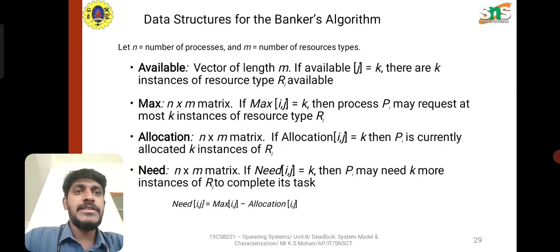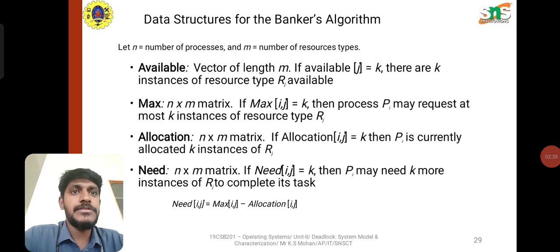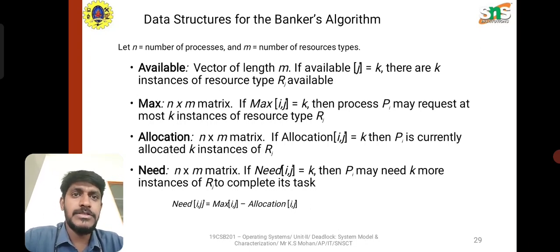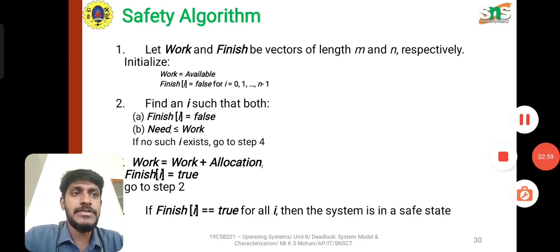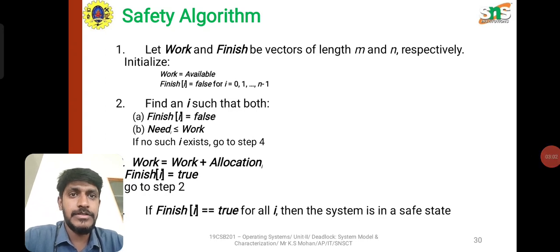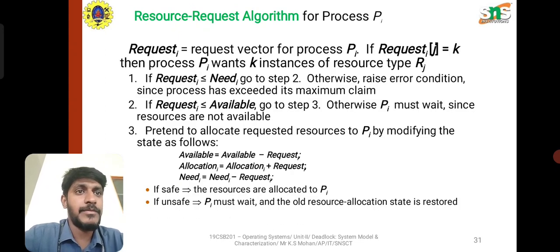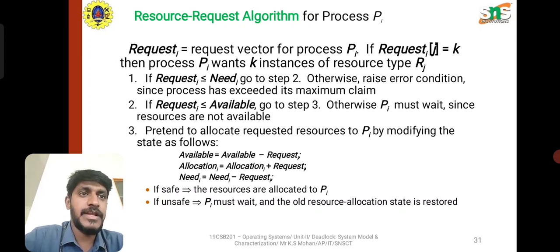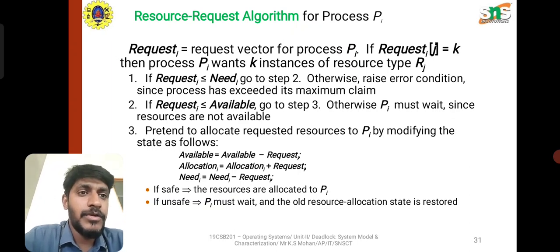For the Banker's algorithm, the data structures used are: Available, Max, Allocation, and Need. Let N equal the total number of processes and M equal the number of resource types. For the safety algorithm, let Work and Finish be vectors of length M and N respectively, where Work equals Available. We find indices such that Finish equals false and Need is less than or equal to Work. For the resource request algorithm, the request vector for process Pi is checked — if the request exceeds the need, an error condition is raised. Then Available equals Available minus Request, and Allocation equals Allocation plus Request. If the resulting state is safe, resources are allocated to Pi; if unsafe, Pi must wait and the resource allocation state is restored.